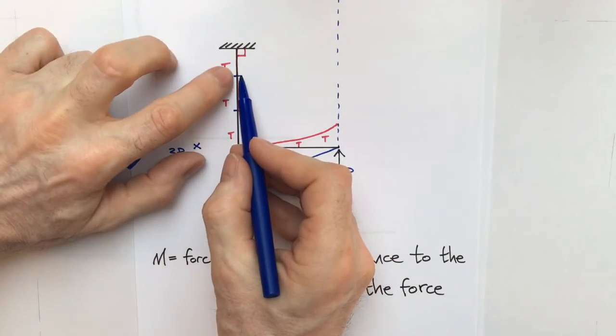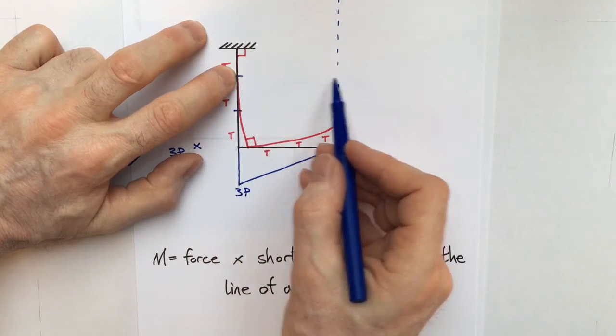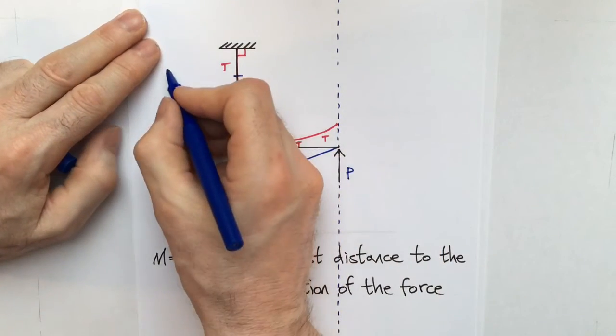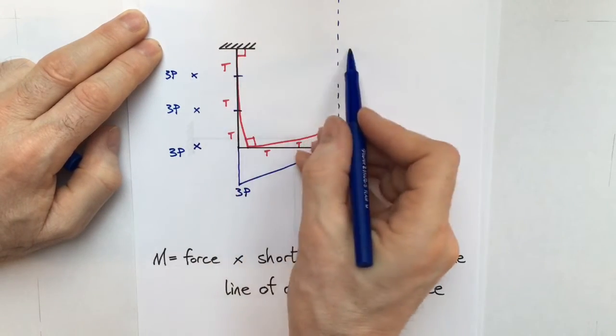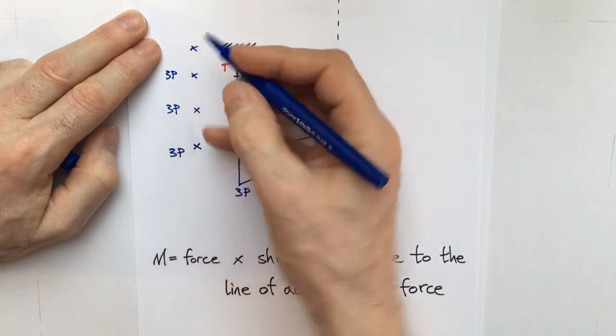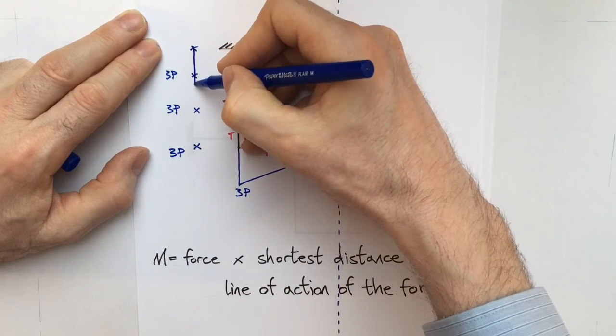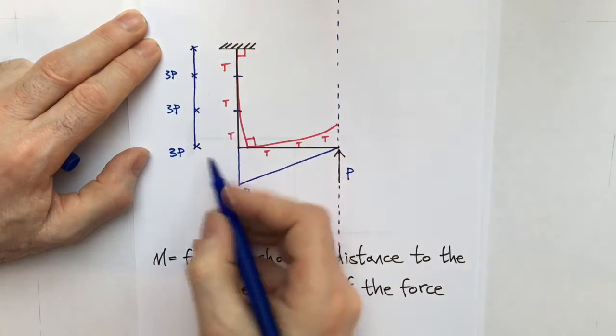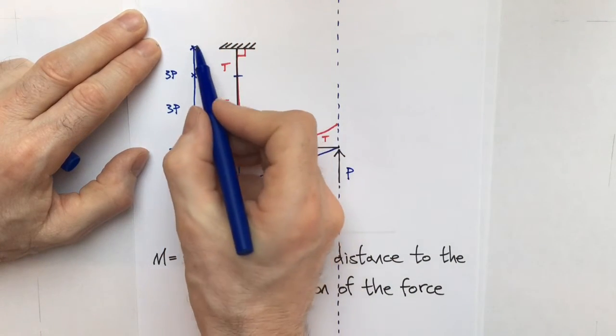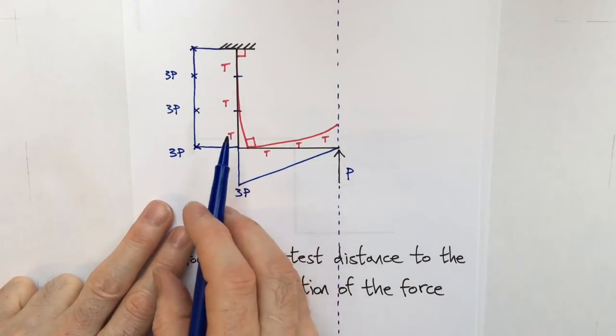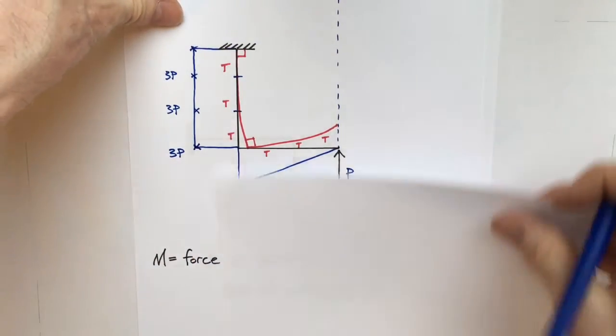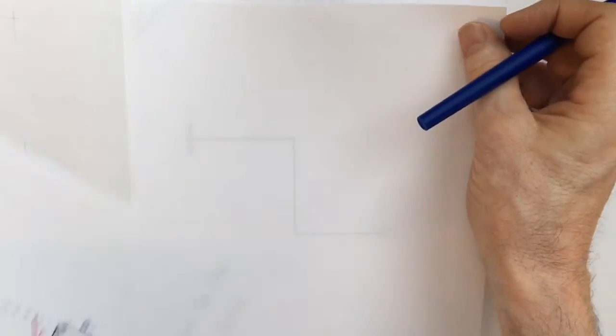Let's move along. What's the bending moment at this point? Well, nothing's changing. It's staying at three P. And the same again at the end, three P. So the bending moment along this stretch of the structure is actually just a rectangle. Well, we're getting somewhere. We're getting somewhere slowly. So now let's look at the final stage.